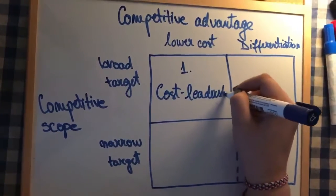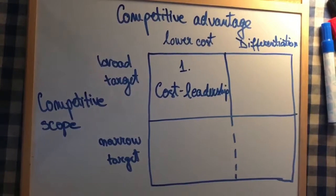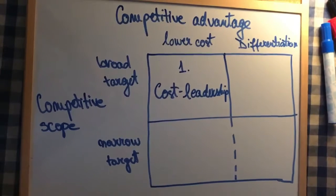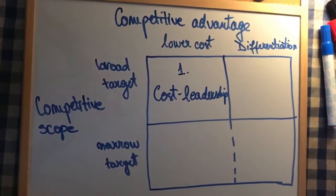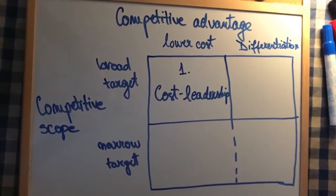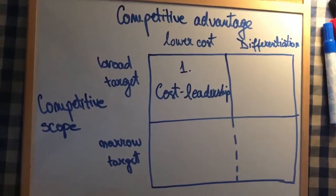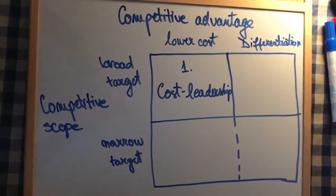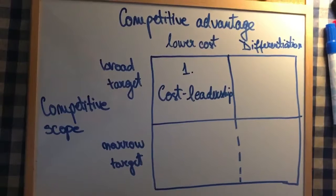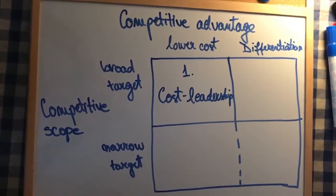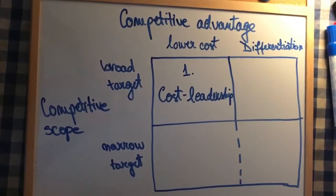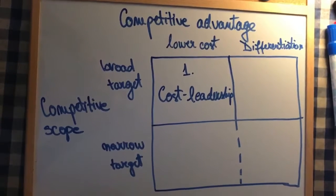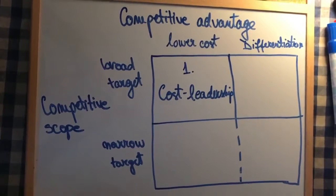The first key driver is input cost — they need to lower their cost for labor or raw materials. The second is economies of scale, so they need to increase the scale to reduce the average cost of operation. The third is experience — the more experience an organization has, the more efficient it gets. And the last one is product or process design, so efficiency can be designed in at the outset.